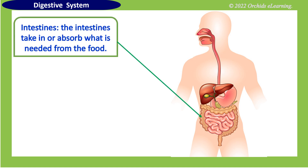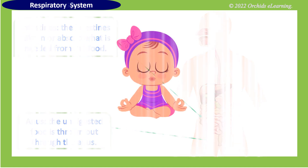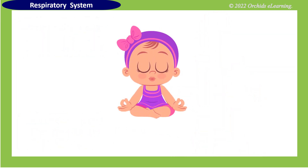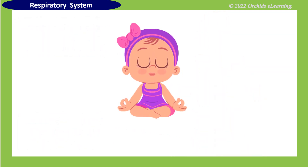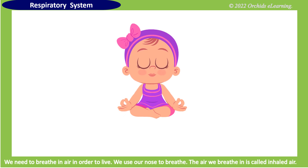The intestines absorb what is needed from the food, and the undigested food is thrown out through the anus. Respiratory system: we need to breathe in air in order to live.